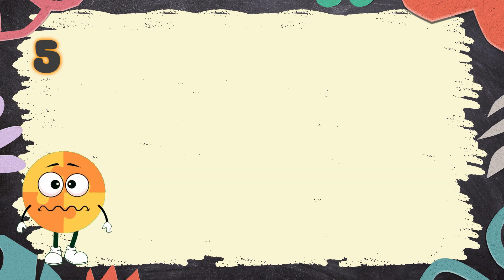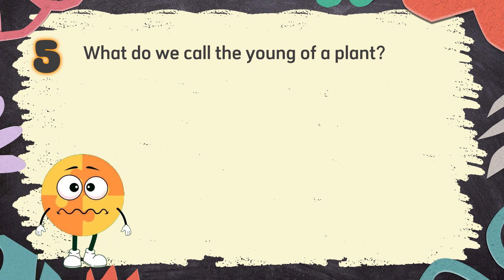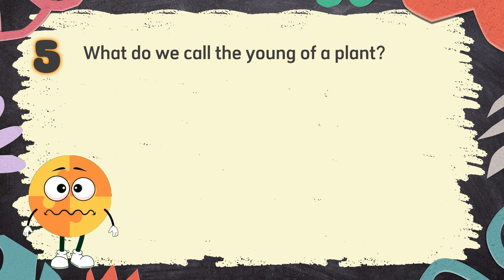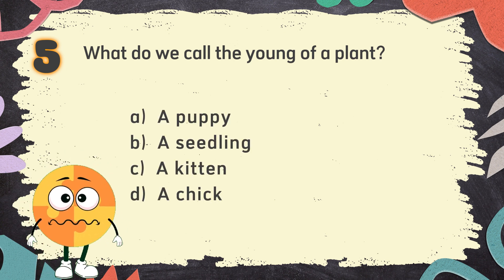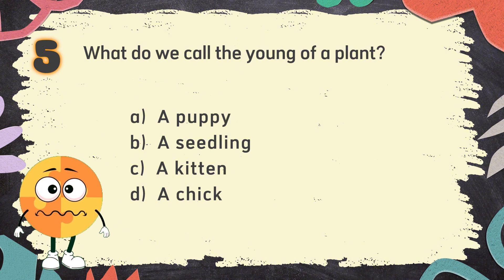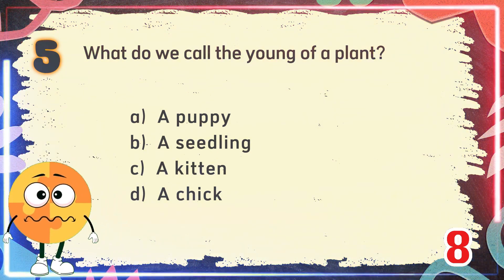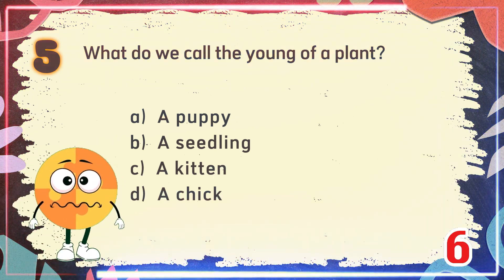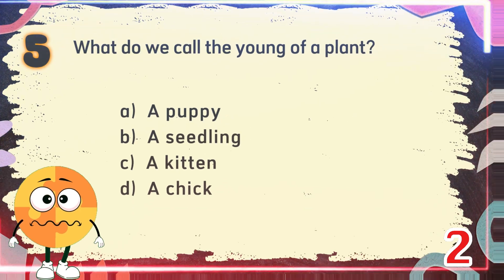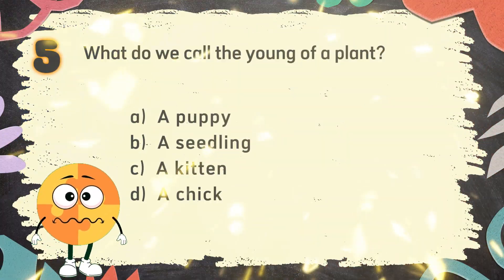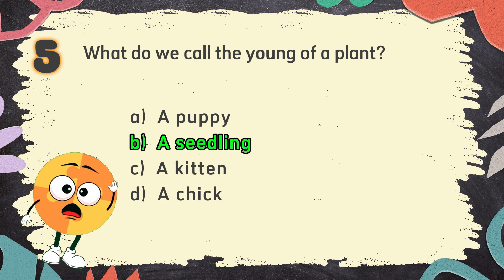Number 5: What do we call the young of a plant? The choices are: A. A puppy, B. A seedling, C. A kitten, D. A chick. The correct answer is B. A seedling.